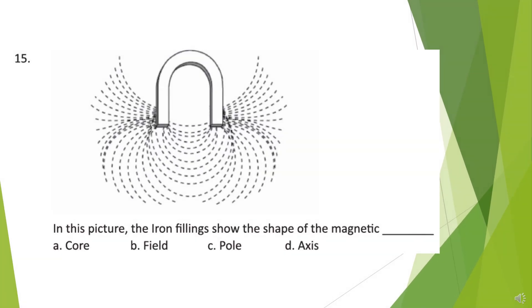Question 15. In this picture, the iron filings show the shape of the magnetic field. Look at the options and choose your answer.